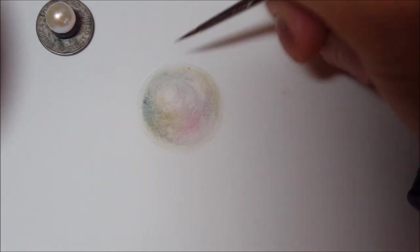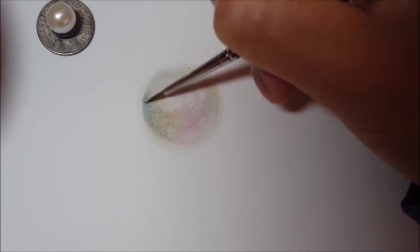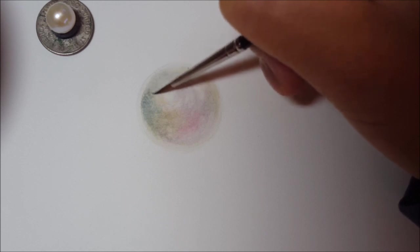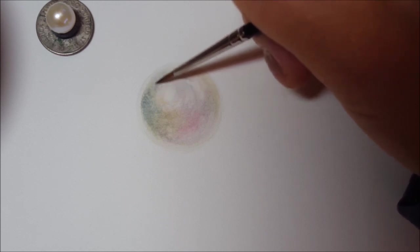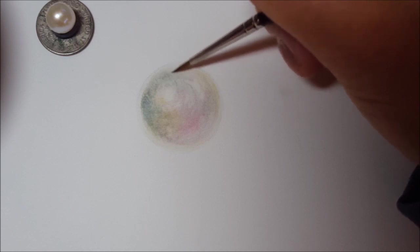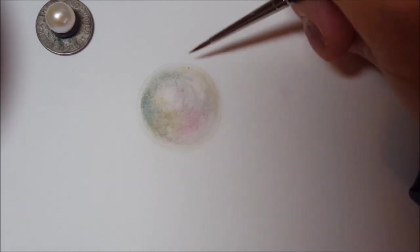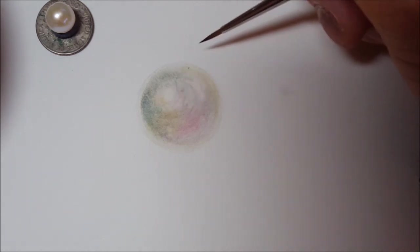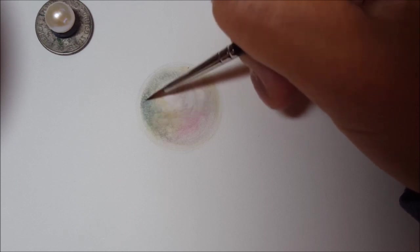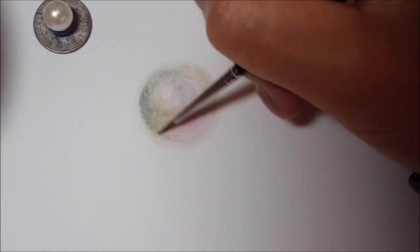And continue darkening this upper hemisphere. I don't know if you noticed at this point I'm full out working in dry brush mode. I'm no longer doing glazing or wet on wet. Everything's pretty dry and I'm using my very small fine brush, fine tipped brush and just very lightly scraping across the surface of my paper in order to create this very delicate shading and texture.